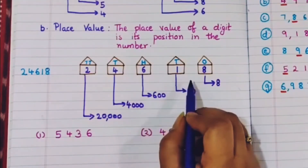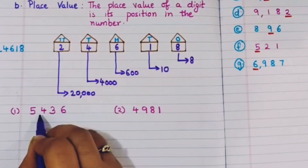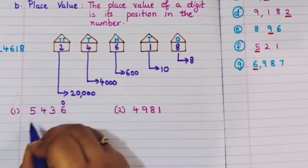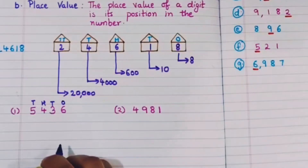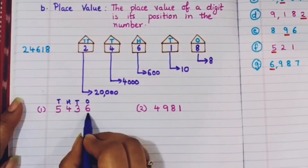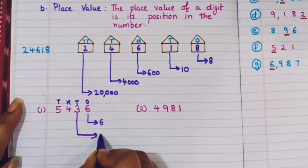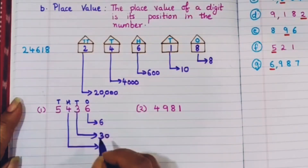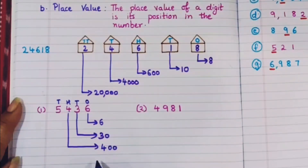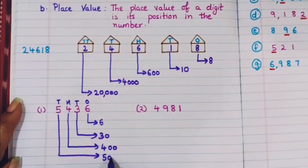Let's do more examples. For 5436: 6 is in the 1's house, 3 is in the 10's house, 4 is in the 100's house, and 5 is in the 1000's house. So the place values are: 6 is 6, 3 is 30, 4 is 400, and 5 is 5000.